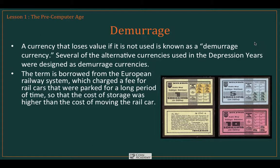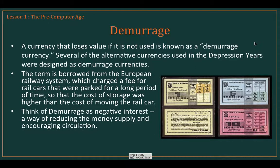The term demurrage, by way of background, is borrowed from the European railway system, which used to charge a fee for rail cars parked for long periods of time. The cost of storage was higher than the cost of actually moving the rail car, which forced railroad companies to use their rolling stock. You can think about demurrage in the context of money as negative interest.